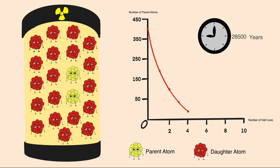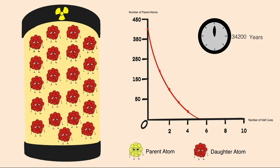Finally, as time progresses, we get to six half-lives and only 1% of the unstable atoms remain. And this has taken us 34,200 years.